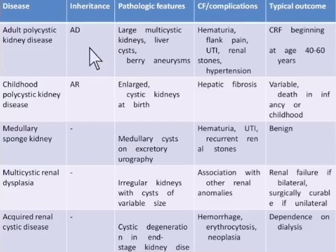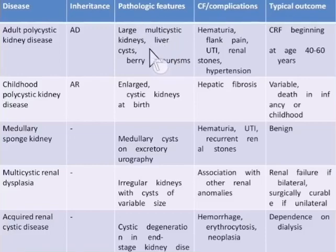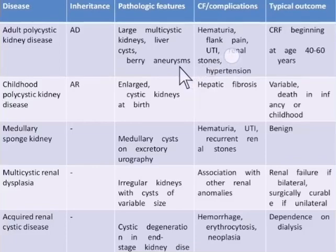Patients with adult polycystic kidney disease usually have other abnormalities. Most importantly, in addition to the multicystic kidneys, there are multiple cysts in the liver and various aneurysms of the circle of Willis. The presentation includes hematuria, flank pain, UTI, renal stones, and hypertension. The prognosis is chronic renal failure beginning at age 40 to 60 years.